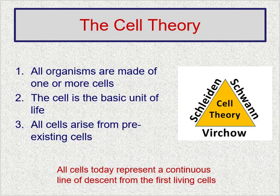The scientific discoveries made by Schleiden, Schwann, and Virchow led to the development of cell theory. The cell theory states that all organisms are made up of one or more cells, the cell is the basic unit of life, and all cells arise from pre-existing cells. Every cell today represents a continuous line of descendants from the first living cells.